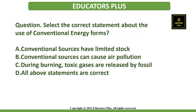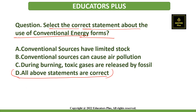The next question: Select the correct statement about the use of conventional energy forms. The correct answer is option D — all of the above statements are correct. These statements are: conventional sources have limited stock, conventional sources can cause air pollution, and burning of fossil fuels releases toxic gases. All these statements are true regarding conventional energy forms.